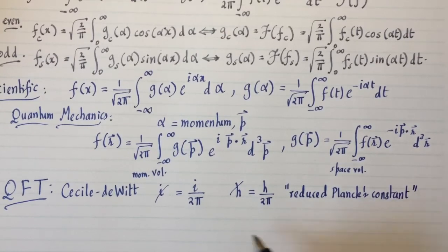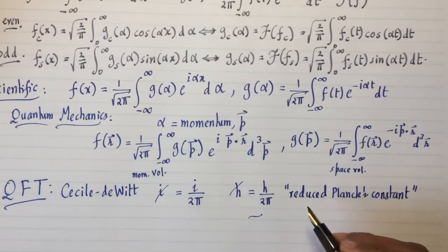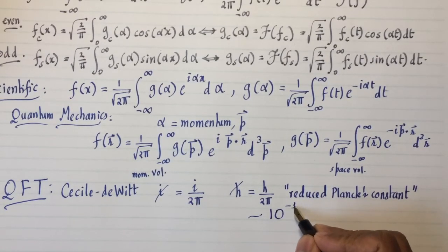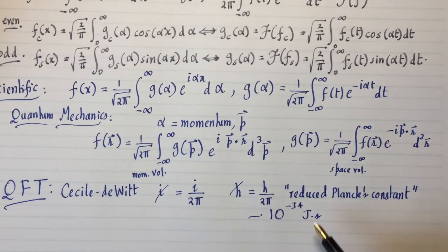Because you're reducing the Planck's constant by a factor of 2 pi. The reduced Planck's constant has got a great utility in physics because h is about 6.6 or something like that, and 2 pi is also the same thing. So this is just 10 to the minus 34 joule seconds. So that makes 10 to the minus 34. You don't have to remember any of those 6.6 stuff in front of the 10 to the minus 34.